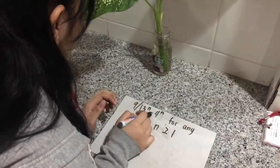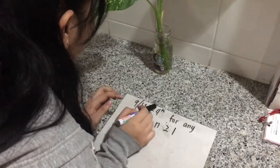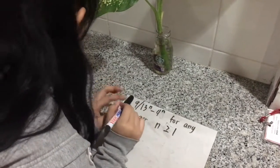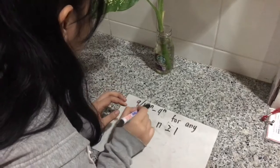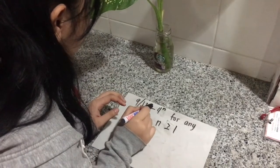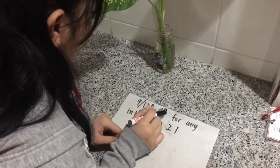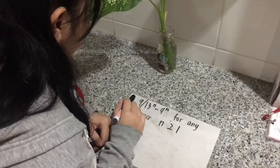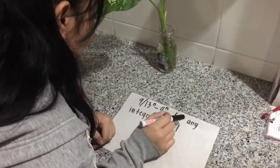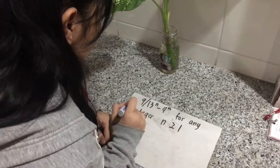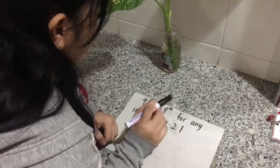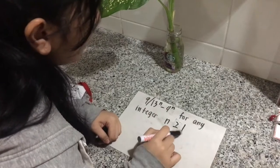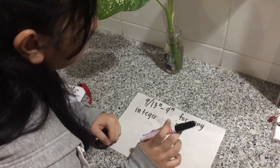The given problem for the mathematical induction is: 13 raised to n minus 4 raised to n is divisible by 9, for any integer n greater than or equal to 1.